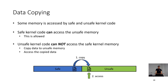In the real kernel code, some data is accessed by both safe and unsafe code. In our design, safe kernel code can access unsafe memory. However, unsafe kernel code cannot access the safe memory. So, if the unsafe kernel code needs to access the safe memory, the data is copied to the unsafe memory so that the unsafe code can access it.